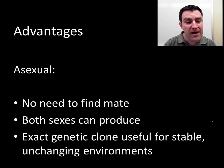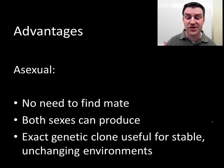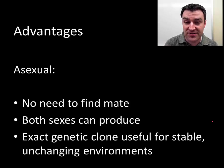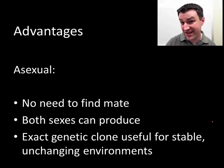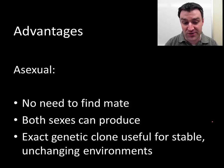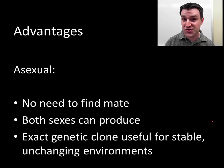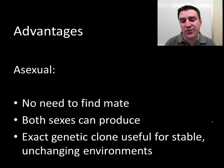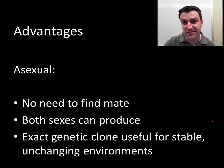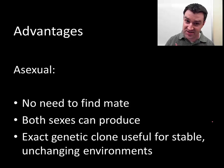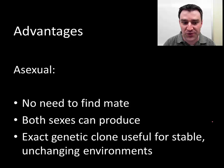Asexual reproduction actually has advantages too. First, there's no need to find a mate — in many species there's a struggle to compete for mates, and if it's difficult to find mates, you can still produce offspring asexually. Both sexes can produce offspring. We can also think of it being useful to produce genetic clones in stable, unchanging environments where that organism is already well adapted to survive — if I'm doing well, my offspring will probably do well also. So there are definitely advantages to asexual reproduction.